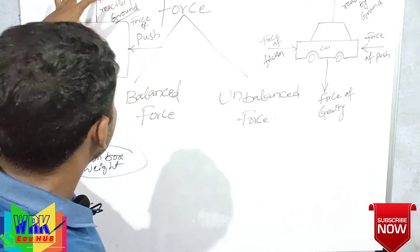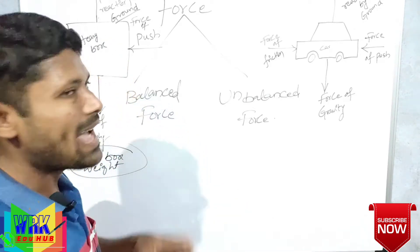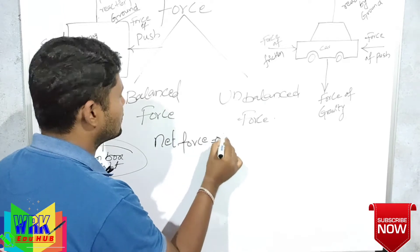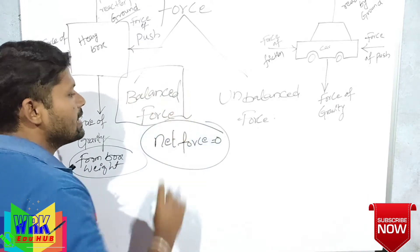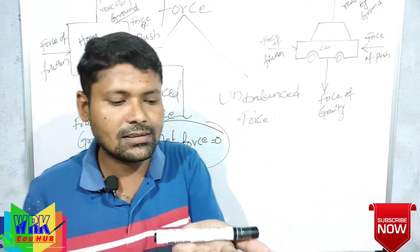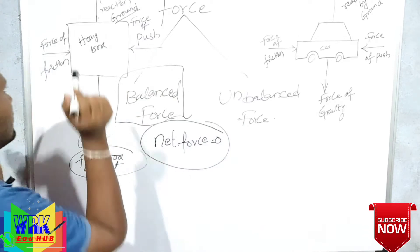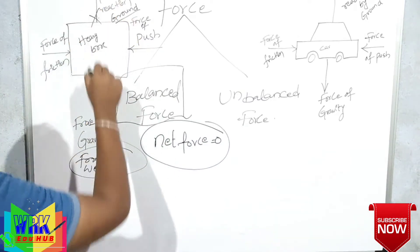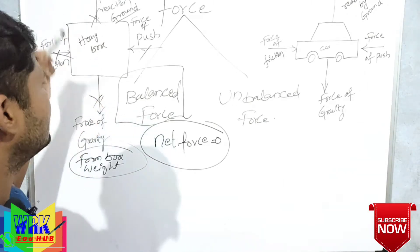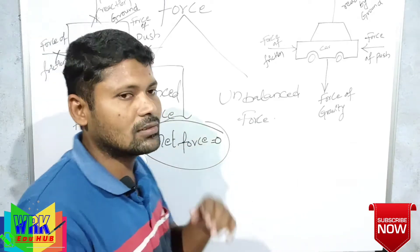If all the forces acting on this heavy box are equal and opposite in direction, then they are said to be balanced forces. That means net force is equal to zero. If it is a balanced force, the net force acting on that object is zero. The forces cancel each other — they are equal and opposite in direction. So F equals zero. These types of forces are called balanced forces.